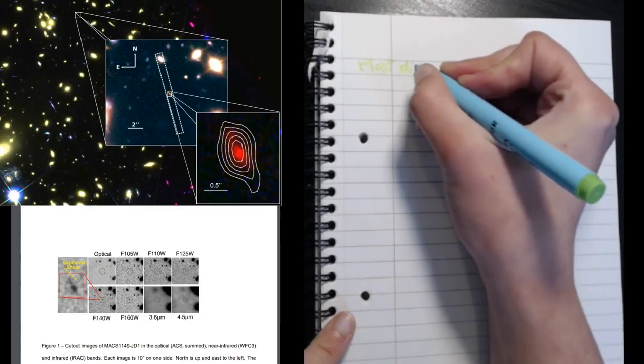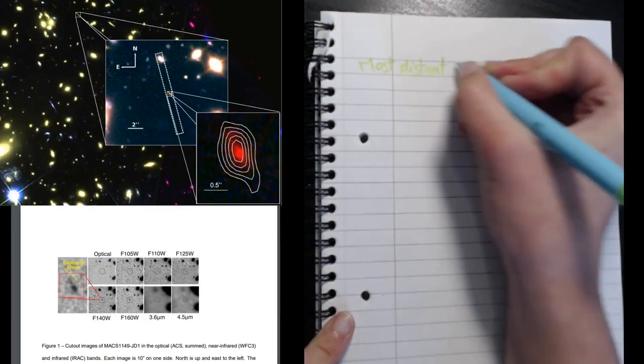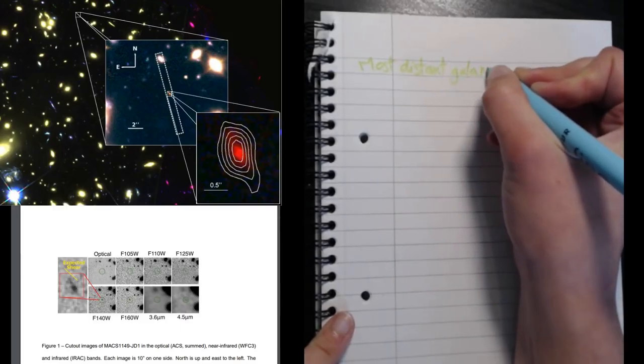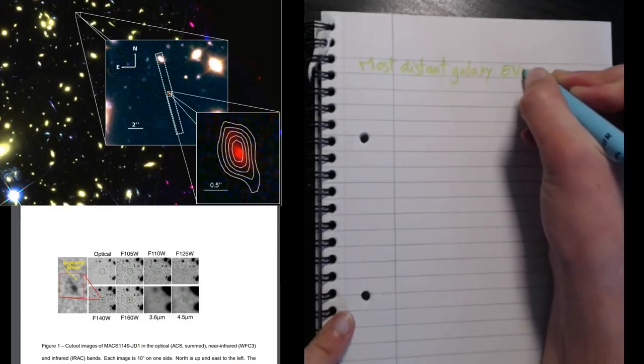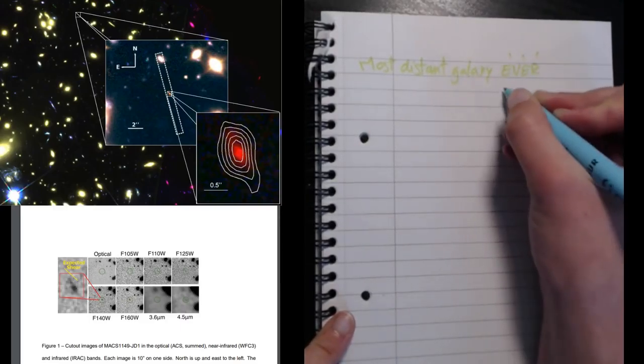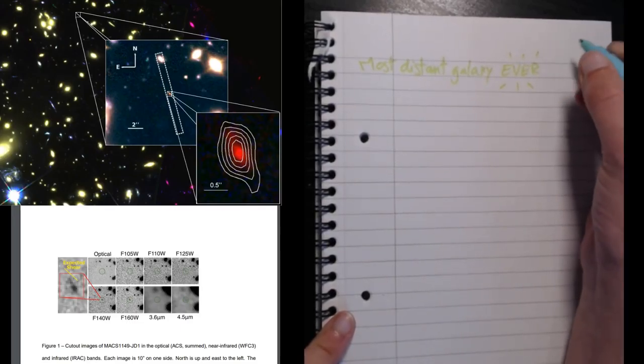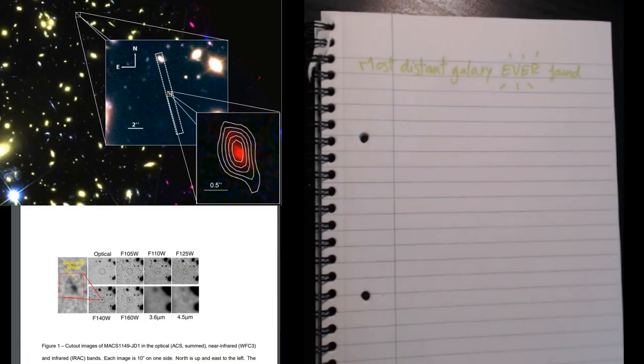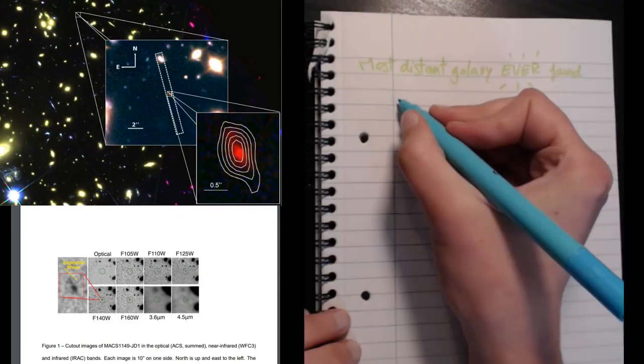If you're watching this video, you might have just heard about the announcement of the most distant galaxy ever found. And you might be wondering, how far is it really? What does it mean for something to be this distant from us? What does it look like? And how do we know it really is what we think it is? Hopefully in this video I will answer some of these questions and go into the science that went into discovering this very rare galaxy a little bit.